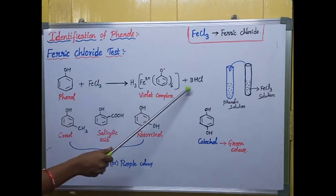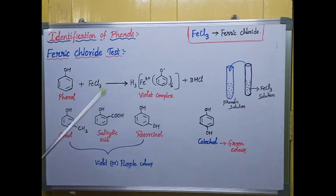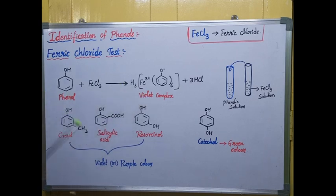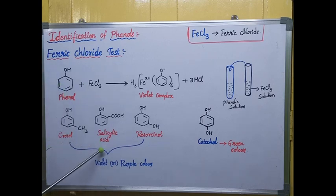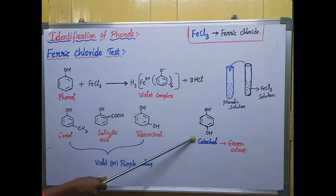A violet or purple color complex is formed along with hydrochloric acid as a product. This violet or purple color complex is the indication of the phenolic group in the solution. Even if you are taking cresol, salicylic acid, or resorcinol, you will get a violet or purple color in the test tube.